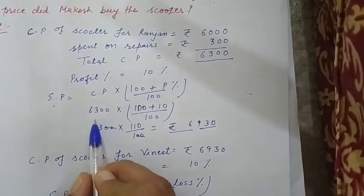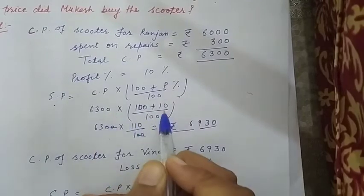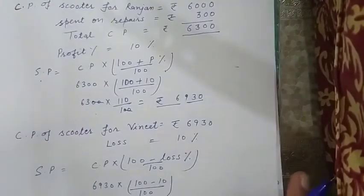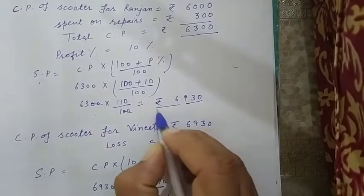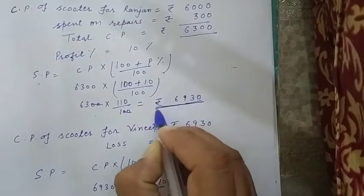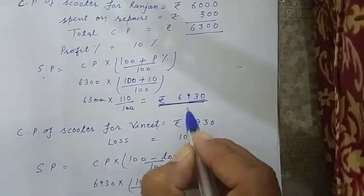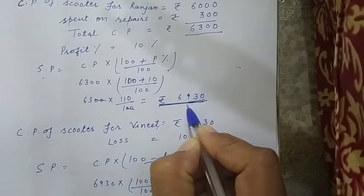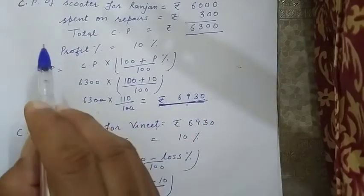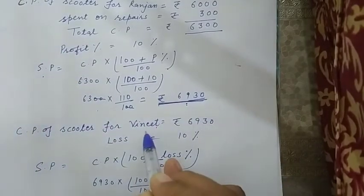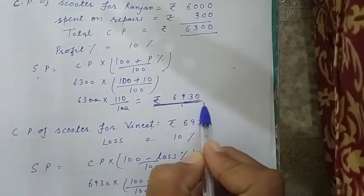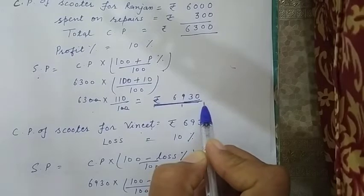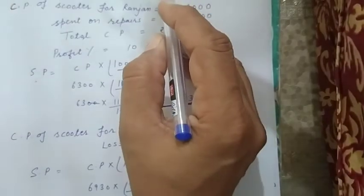By putting the value of CP and profit. Aab kya ho jayega? Cost price of scooter for Vineet. Aab maatle ki ye is cost price per ranjan ne Vineet ko ye scooter bach diya. Maatle ki ye ranjan ki toh SP hai aur Vineet ki CP hai. 6,930. Toh iska maatle vineet ne 6,930 me e usko kharita. Toh ab usne vineet ne kya kiya?